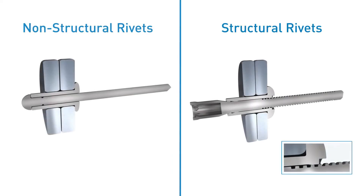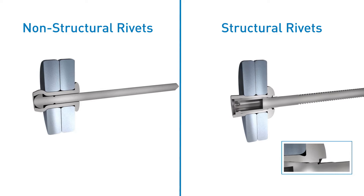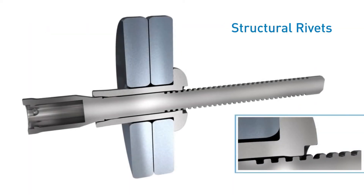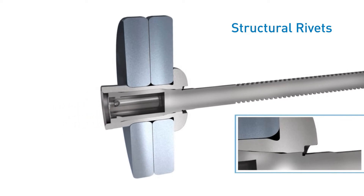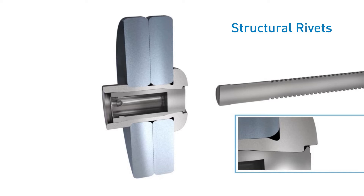So what's the difference between these blind rivets? The difference between structural and non-structural rivets is that the breaking point of the mandrel for structural rivets is predefined and breaks always above the shear edge of the application material. Also the mandrel gets mechanically locked inside the blind rivet body so it never falls out. This ensures that the mandrel always supports the mechanical force resistance in terms of shear and tensile forces at the fastening point.